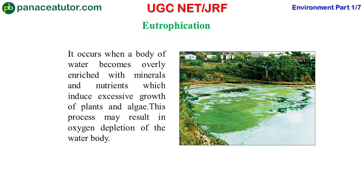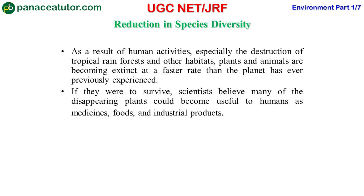Next is reduction in species diversity. Due to human activities causing overpopulation, deforestation, desertification, greenhouse effect, and global warming, many plants and animals are going extinct at a very fast rate. This is again a very dangerous problem.